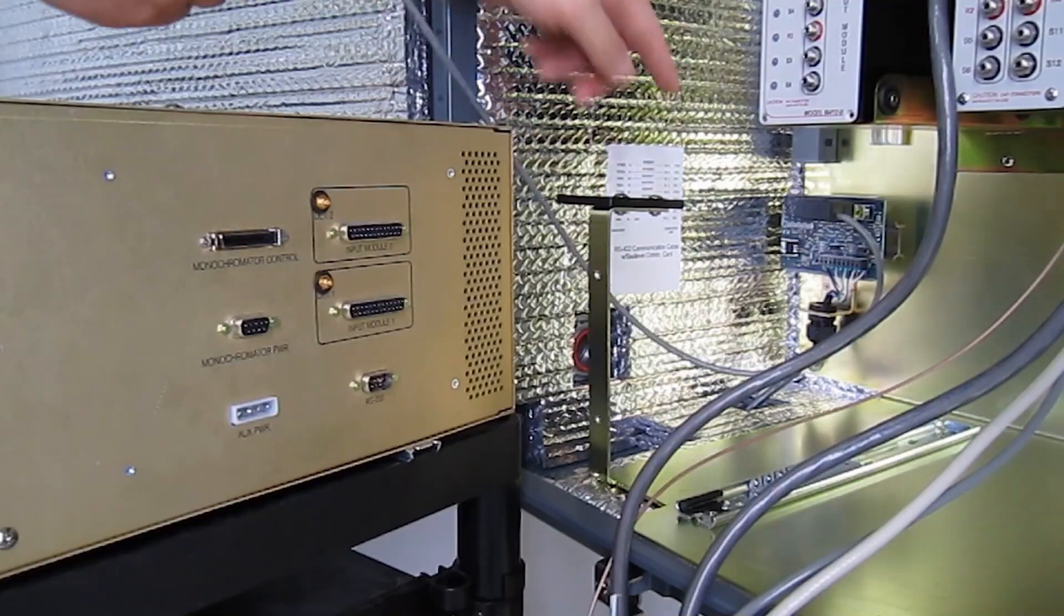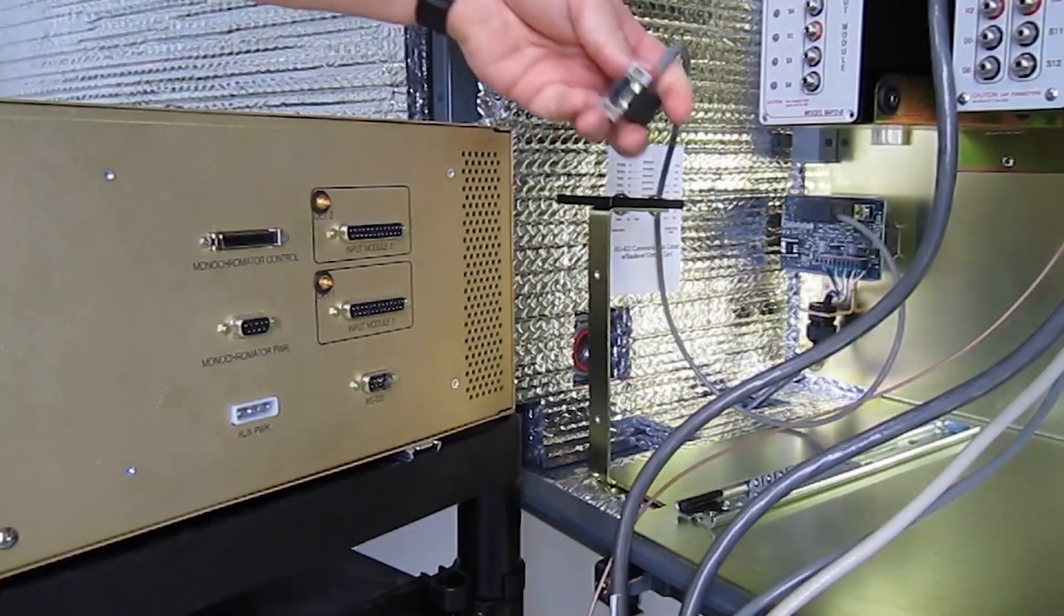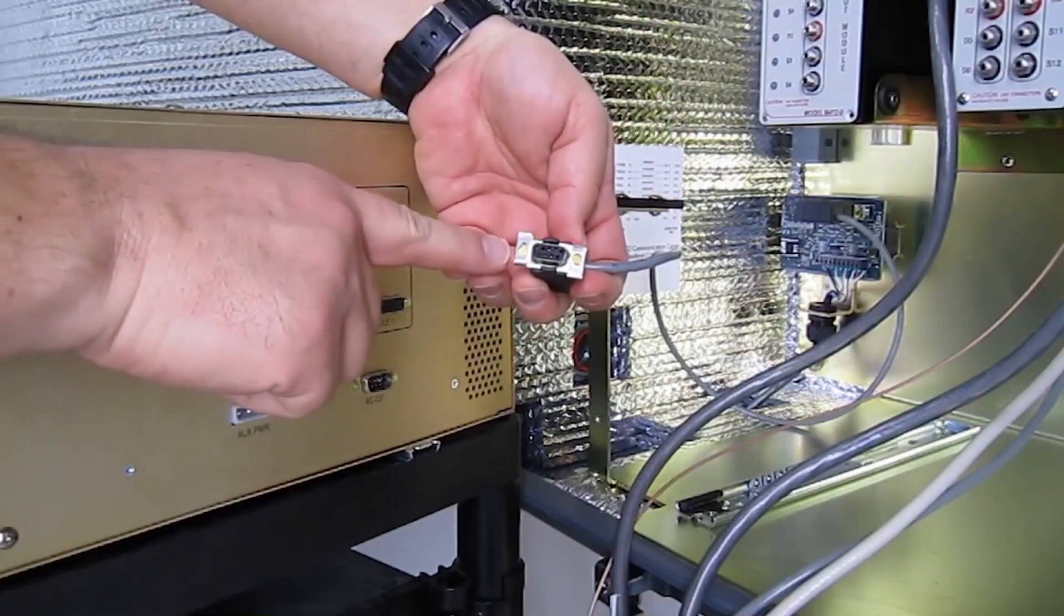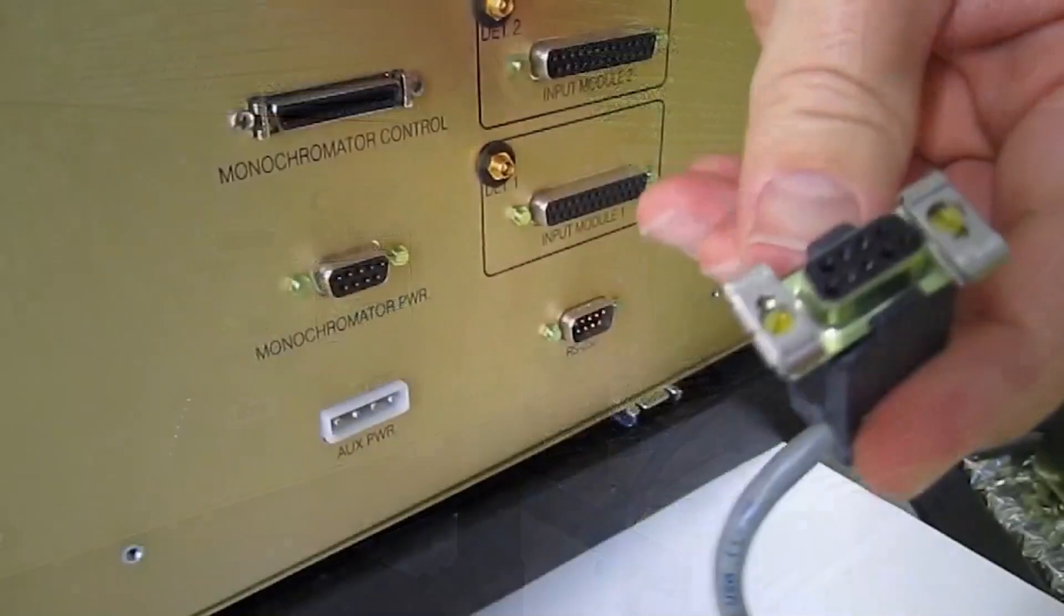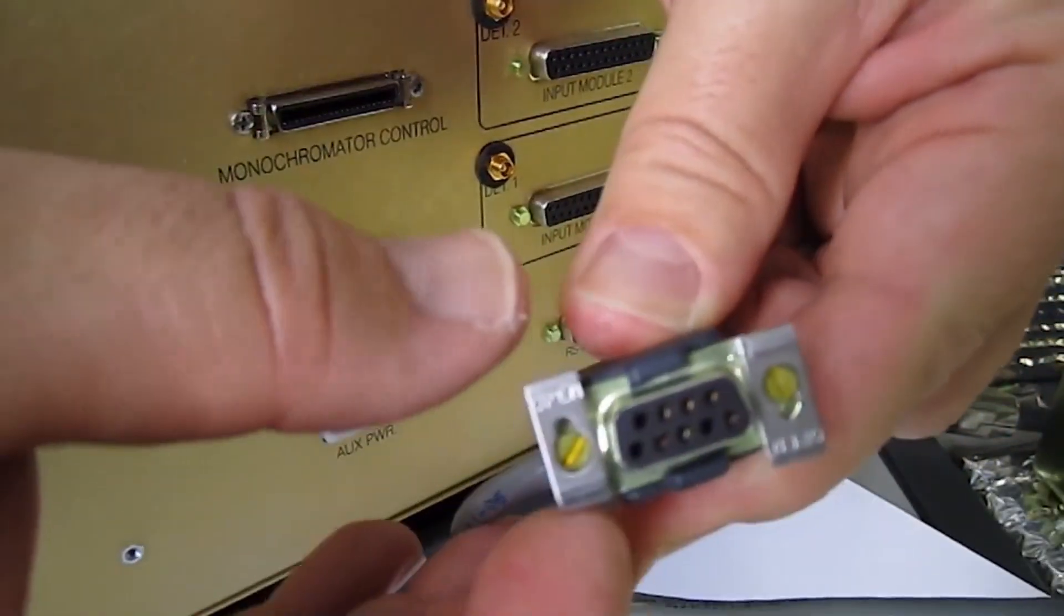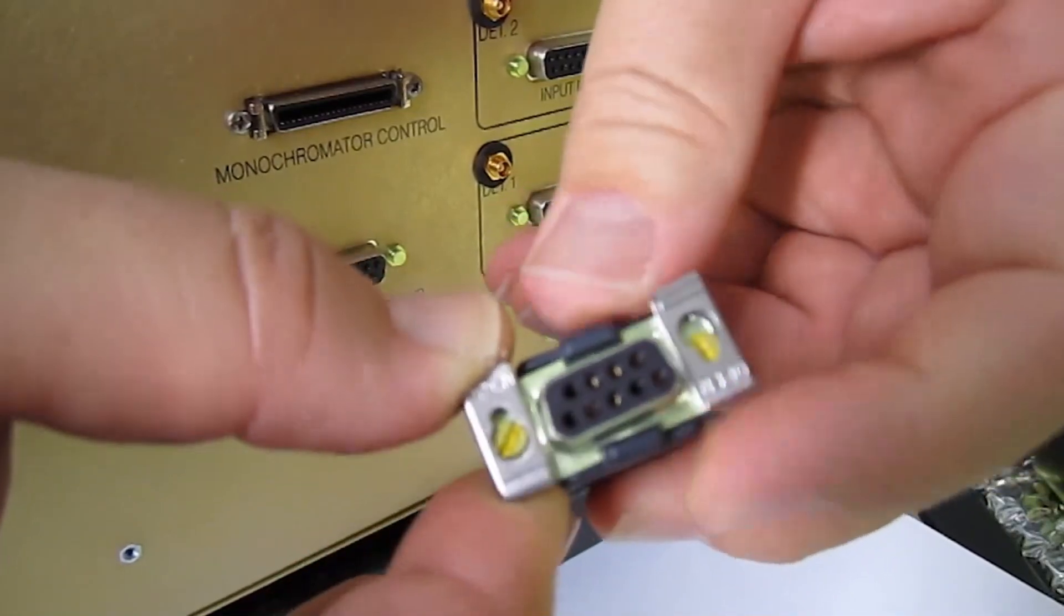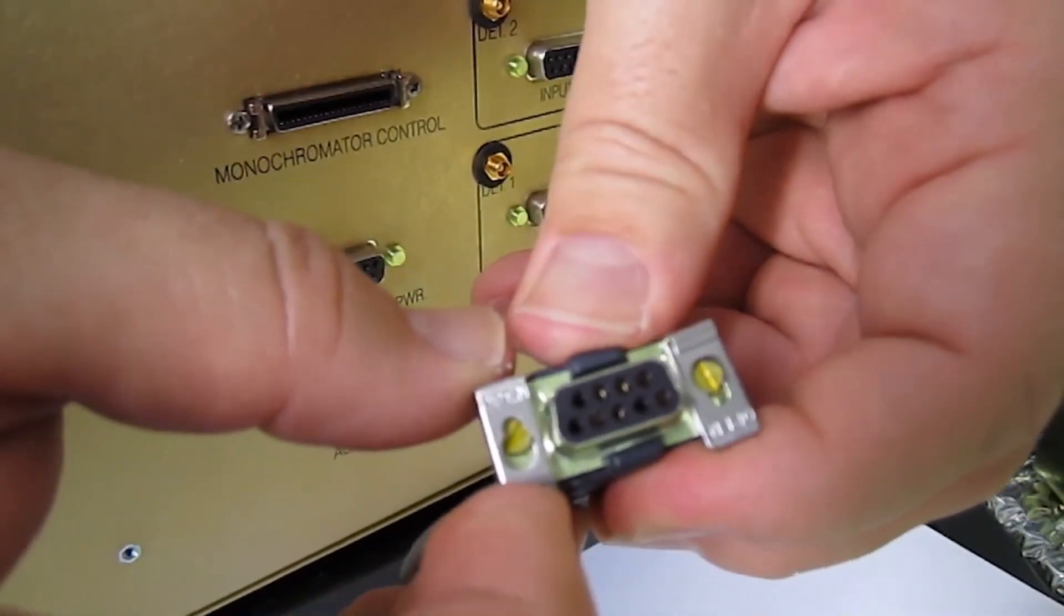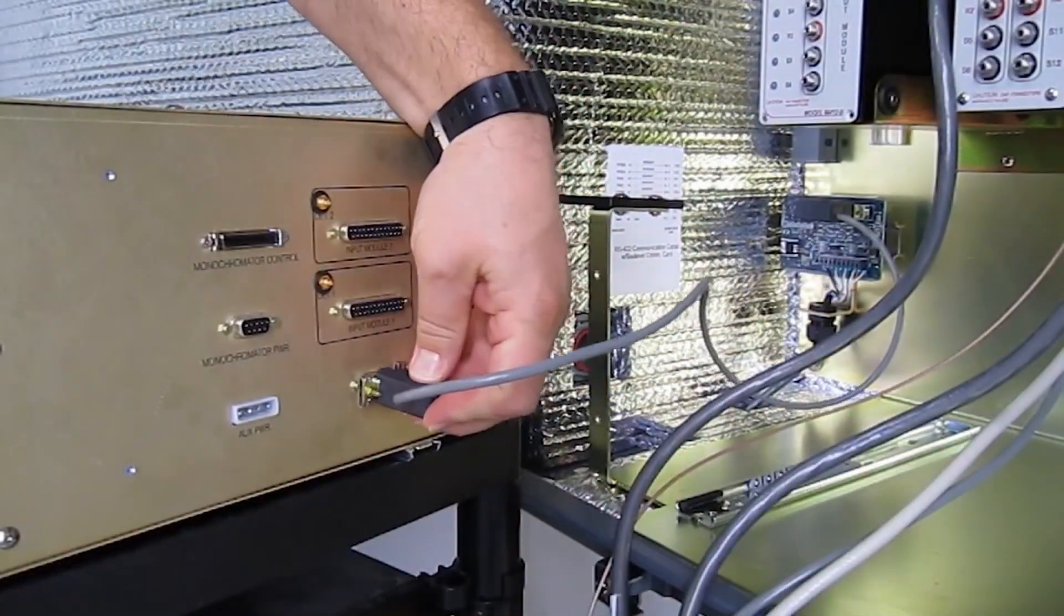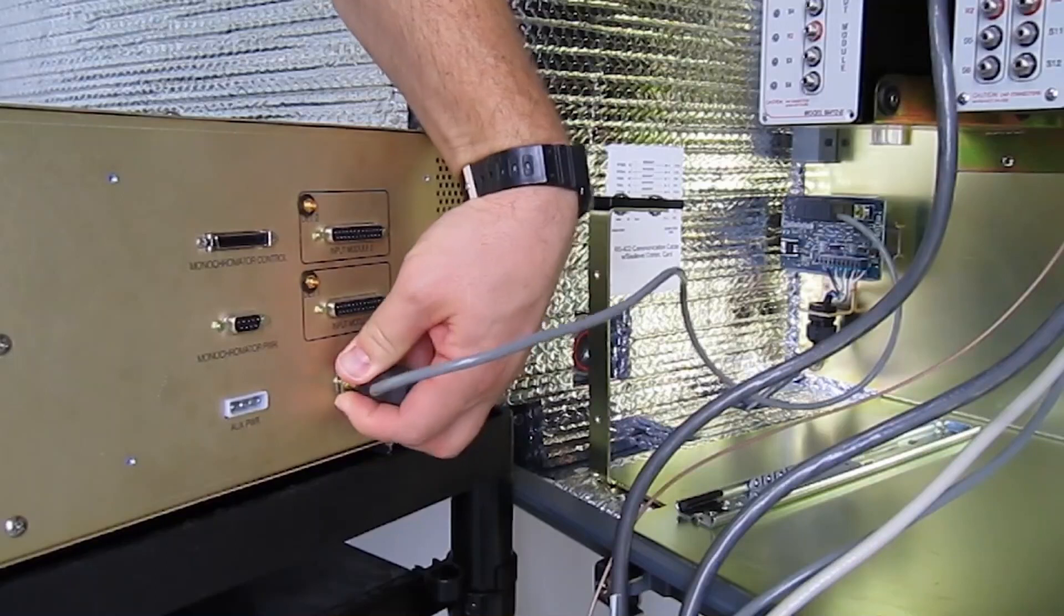Starting with the RS232 to 422 converter, plug in this cable. I've got the latches in the unlatched position. You can see the latching mechanism, and then it'll plug in right here, and then I push that one up and that one down, and then it's latched.